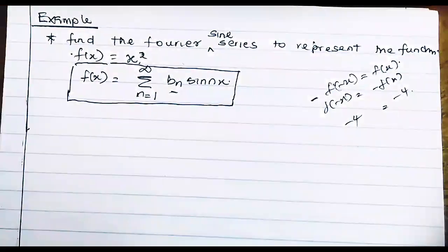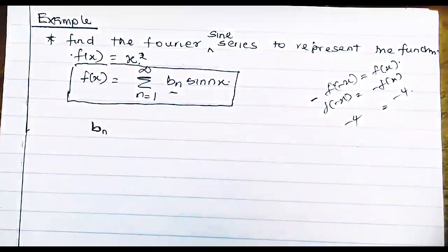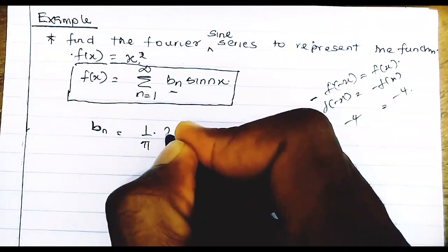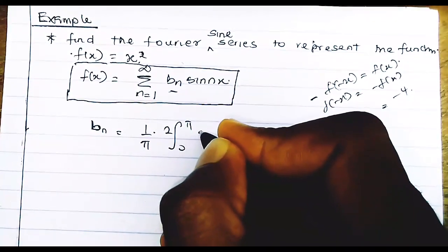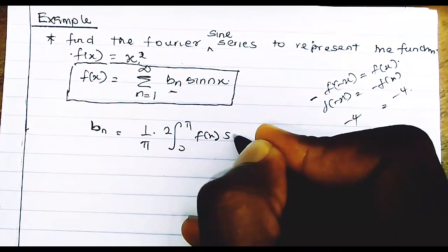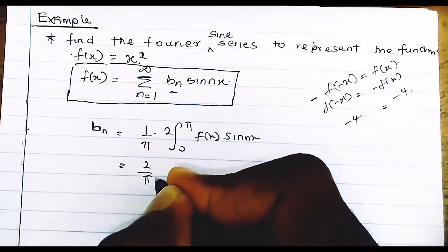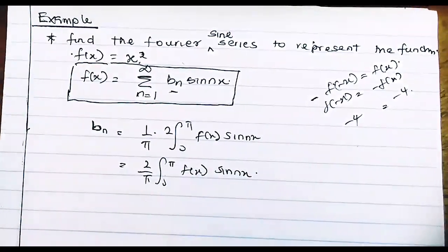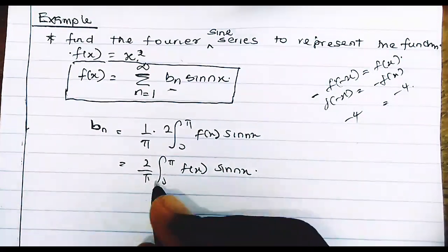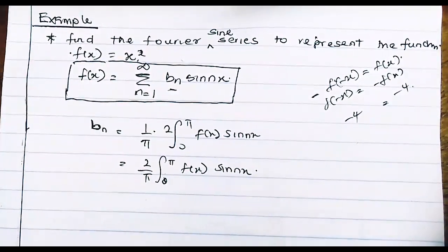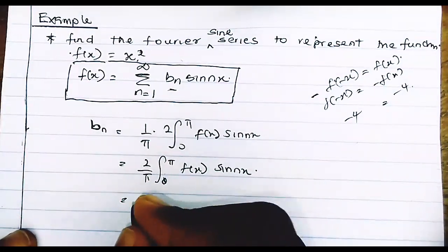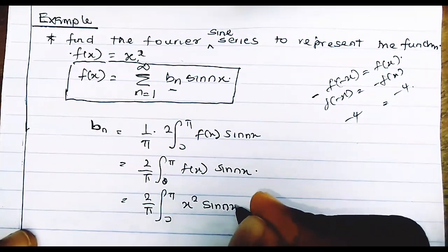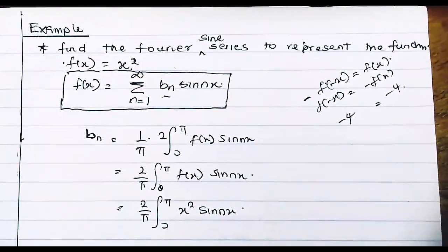First we need to find bn. For an odd function or sine series, bn is equal to (2/π) times the integral from 0 to π of f(x)·sin(nx) dx. Since our f(x) is x squared, we substitute to get: bn = (2/π) ∫₀^π x²·sin(nx) dx.